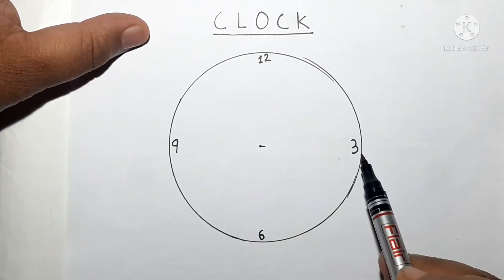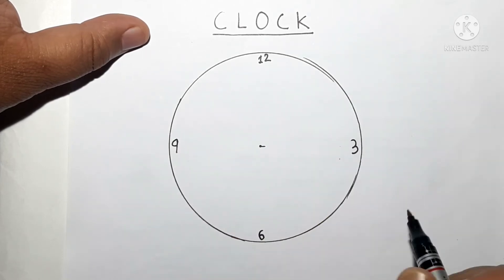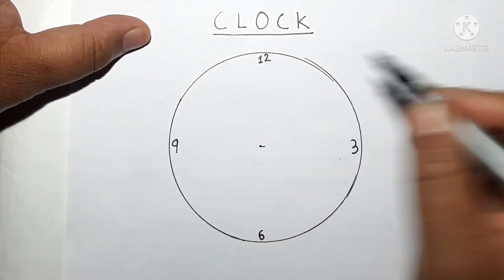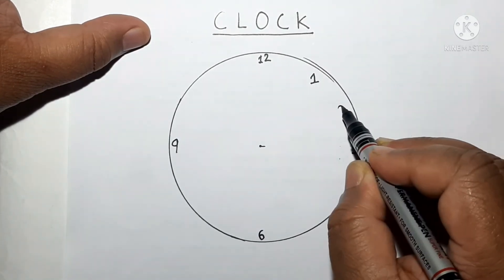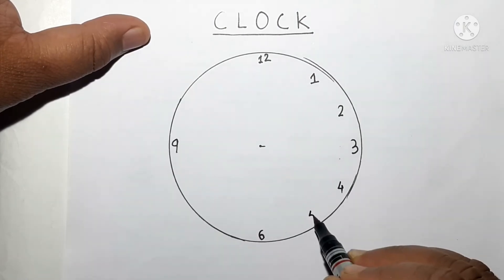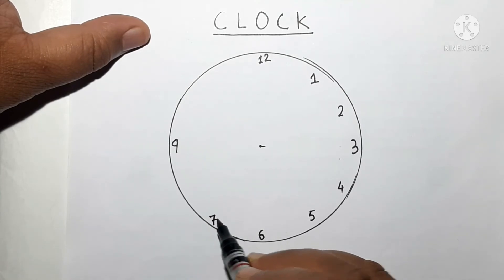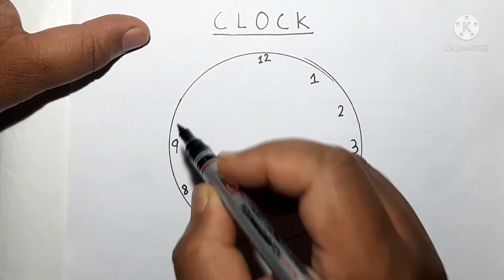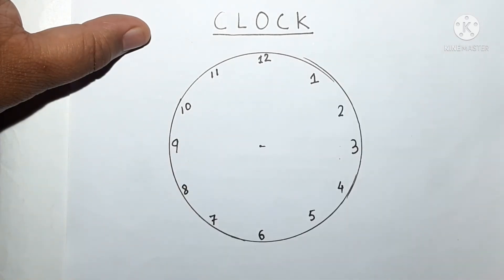Now we will write rest of the numbers. After 12 comes 1 and then 2. After 3 comes 4 and 5. After 6 comes 7 and then 8. After 9 comes 10 and 11.